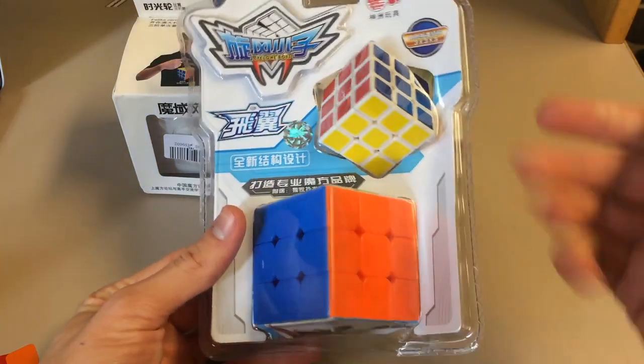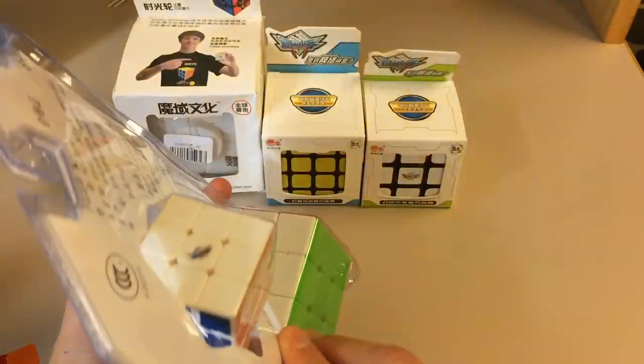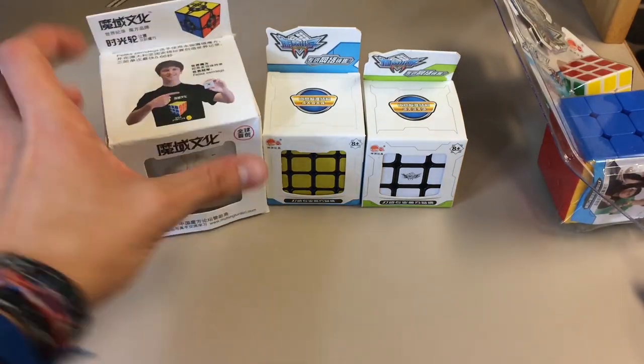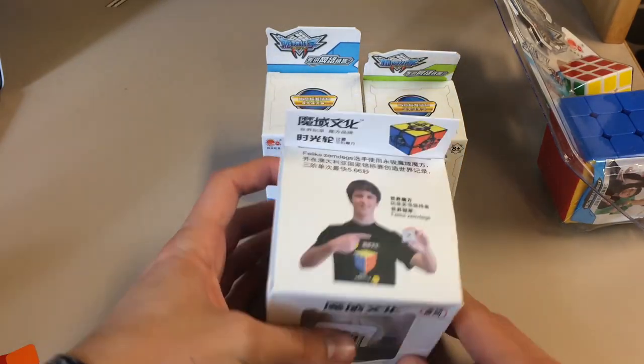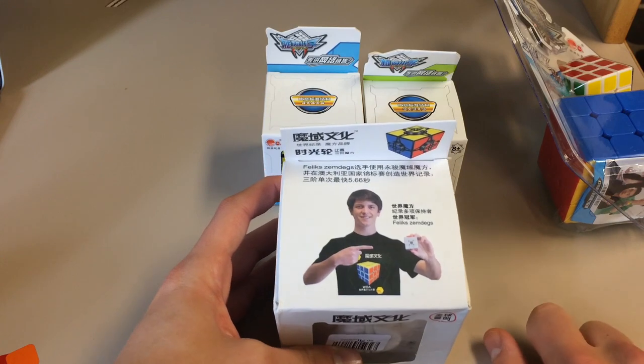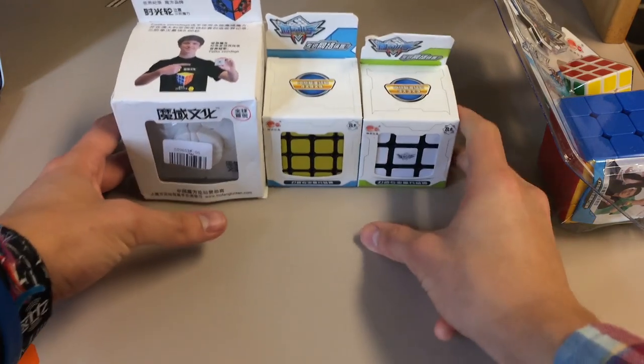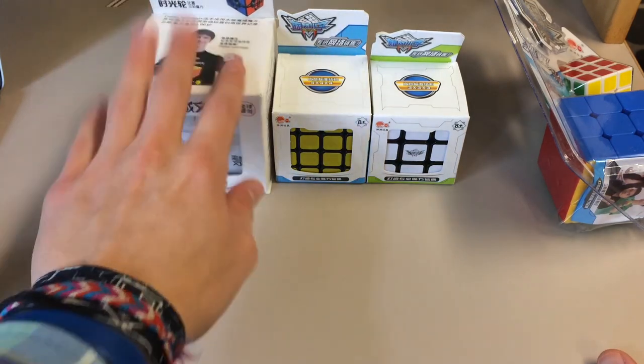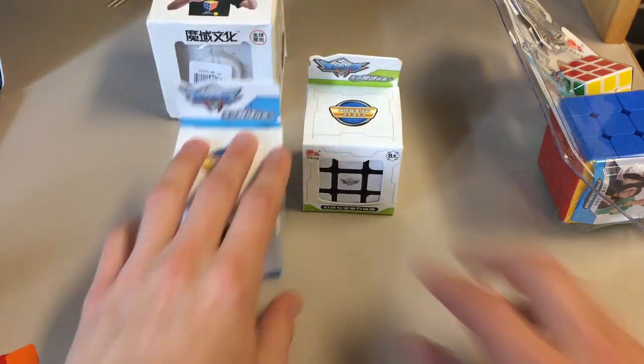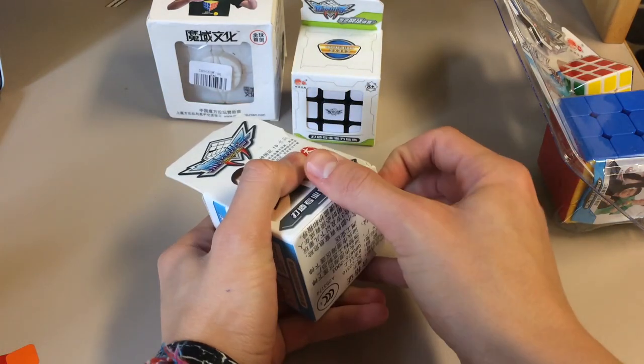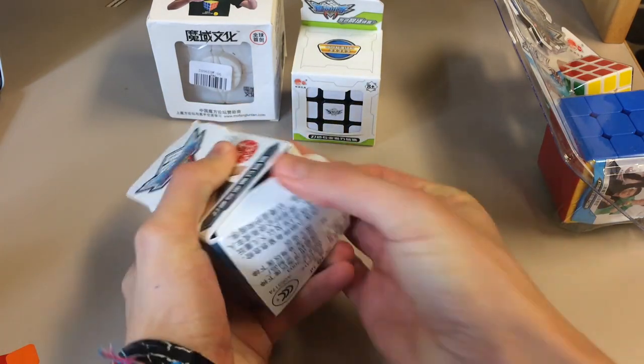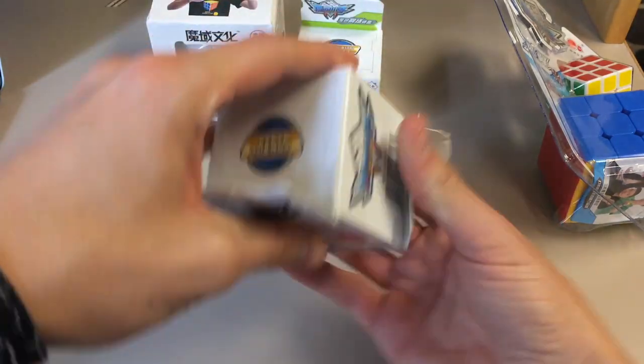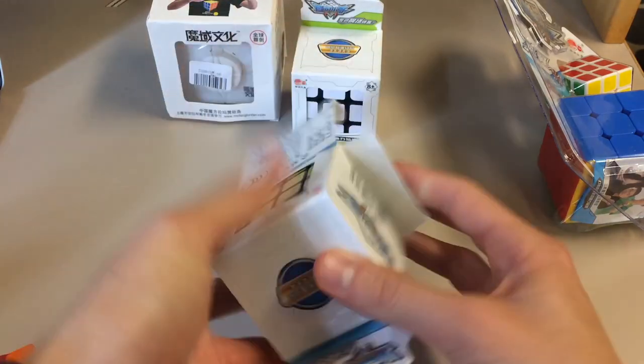I have zero idea what this is, but it comes with a nice mini cube. So that's really cool. I've never had a mini Cyclone Boys. I didn't even know they had them. And then here we have the Moyu Wheel of Time. And I find it kind of funny that Moyu still puts Felix on the box, even though he changed his main to the Gans 356 for those of you that didn't know. But anyways, I'm going to jump into this last because I've been looking forward to that.